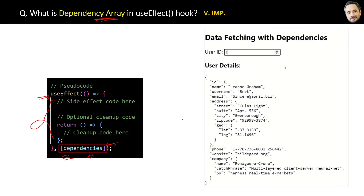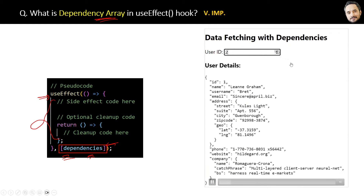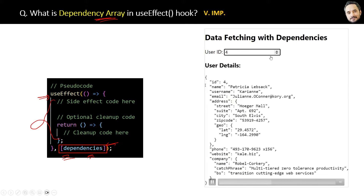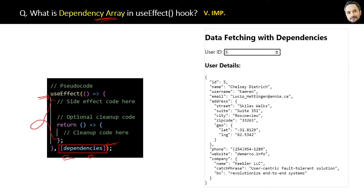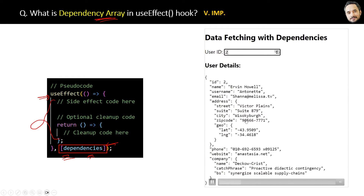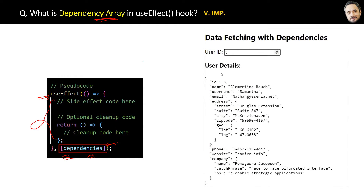Here, the userId element is in the dependency array, and when we change its value, the data will be refetched from the API and re-rendered to the UI — meaning the effect function is rerunning on changing the element value in the dependency array.